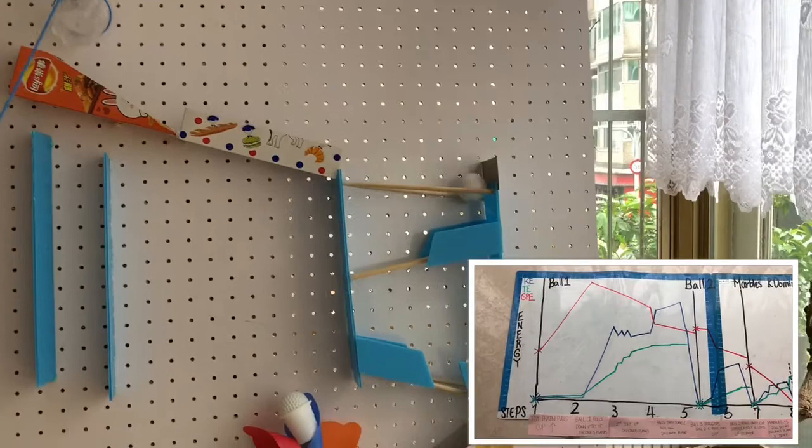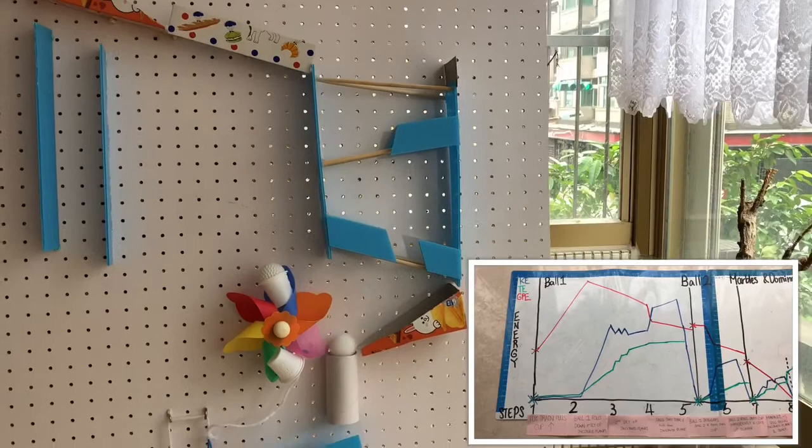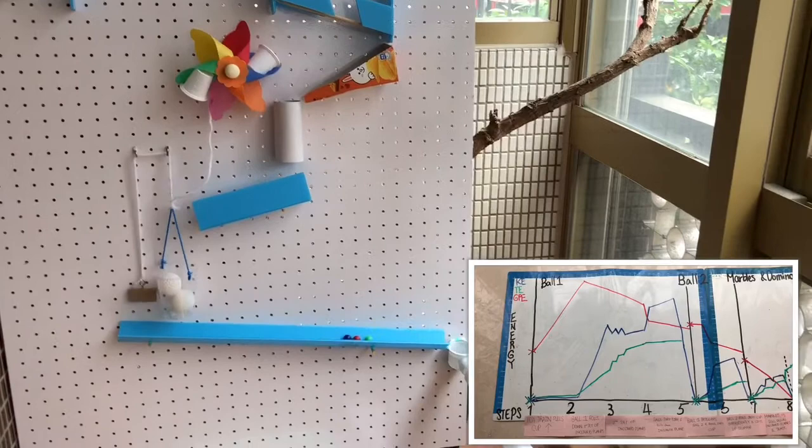The thermal energy increases as ball one rubs against the chopstick. As it falls through the tube, its kinetic energy spikes up. Simultaneously, its GPE is decreasing. The second ball one drops into the cup, its KE drops to zero.